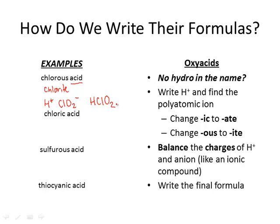Chloric acid — -ic comes from -ate, so I'm looking for the chlorate ion. 'Acid' tells me there's H+. I look up chlorate on my list of polyatomic ions and find it's ClO3 with a −1 charge. I balance those charges and get HClO3.